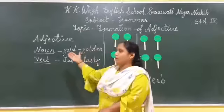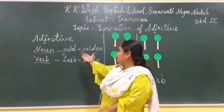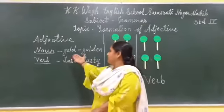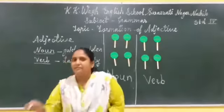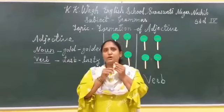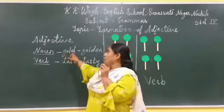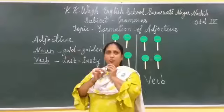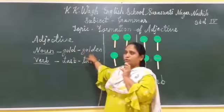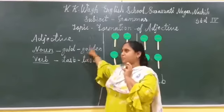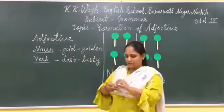In adjectives, we are going to learn about nouns and verbs. So for nouns, we will take the word gold. In my hand there is a watch which is gold. The word gold is a noun, and from the word gold it becomes golden. So golden is an adjective. Gold is a noun and golden is an adjective.